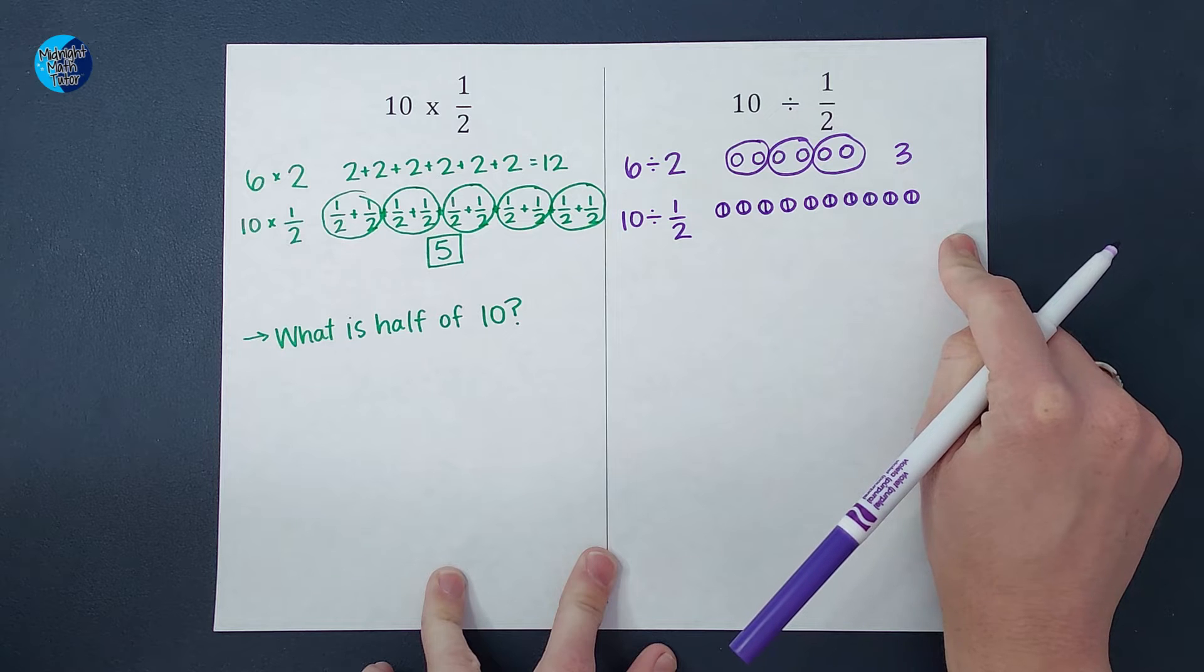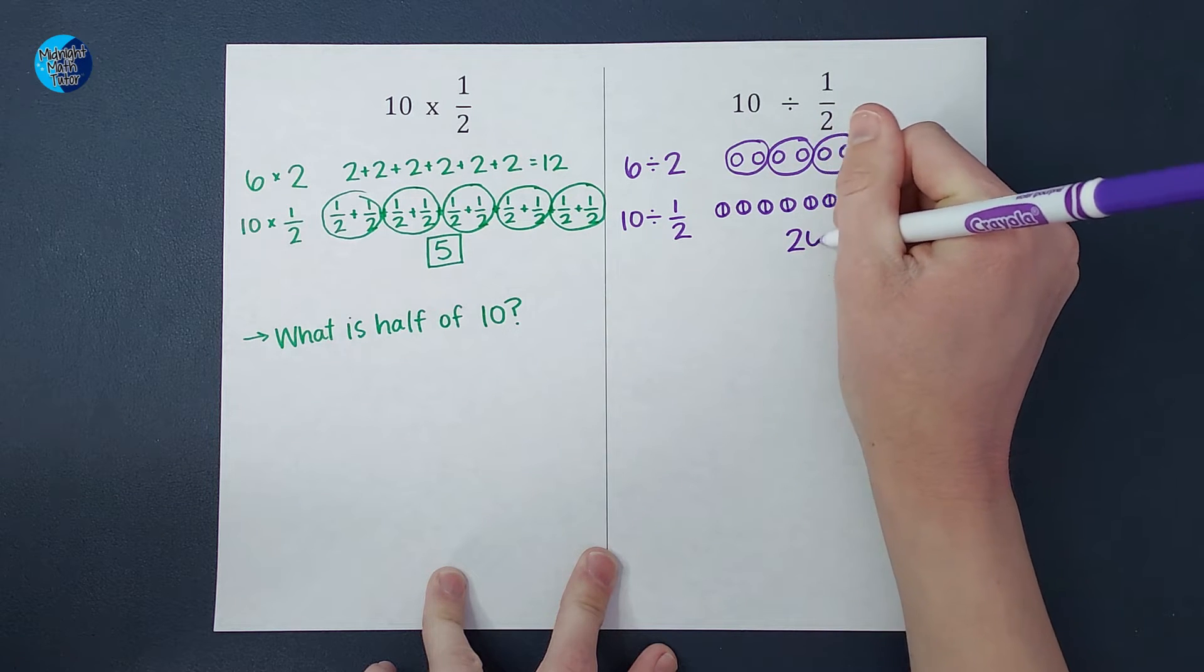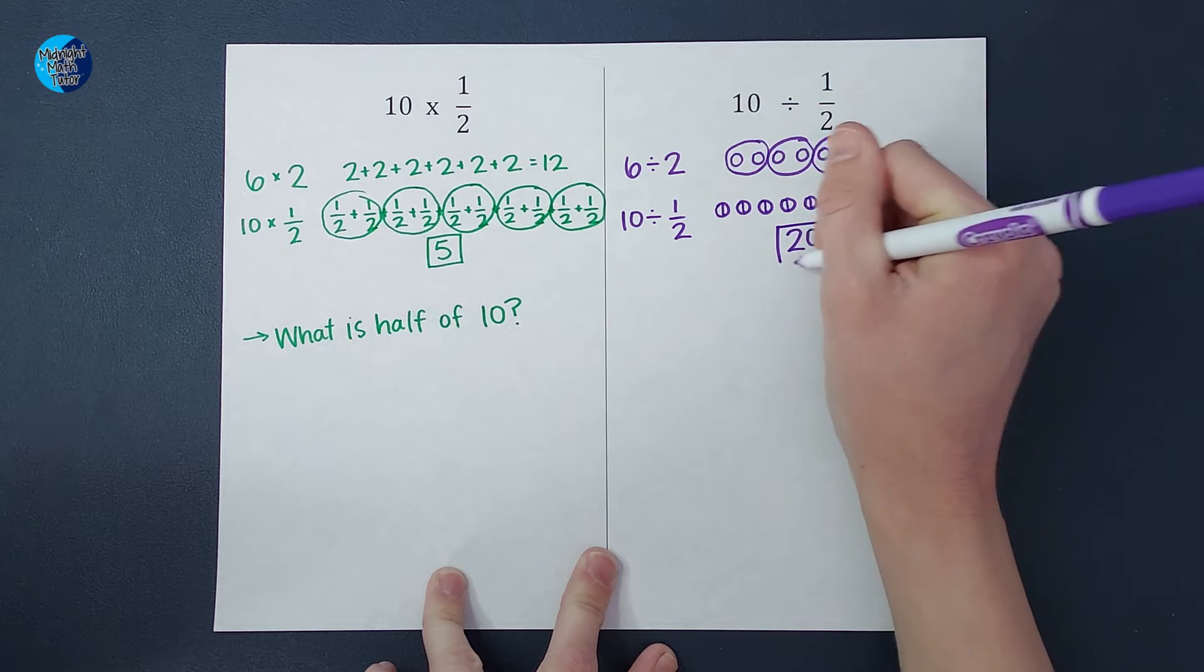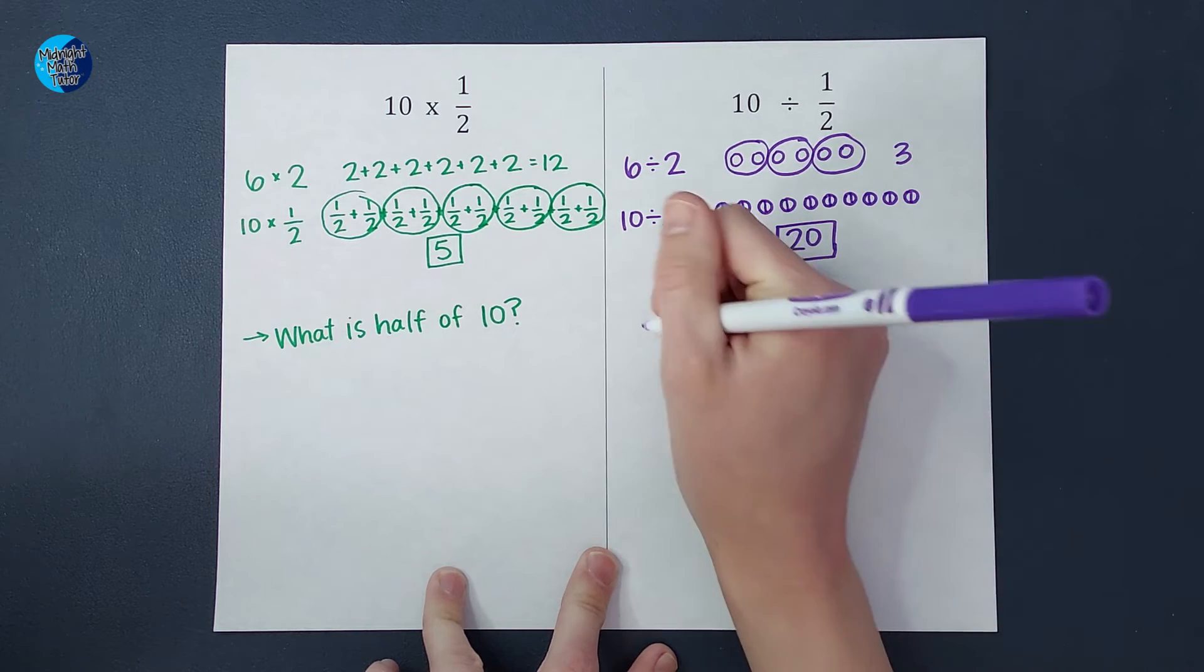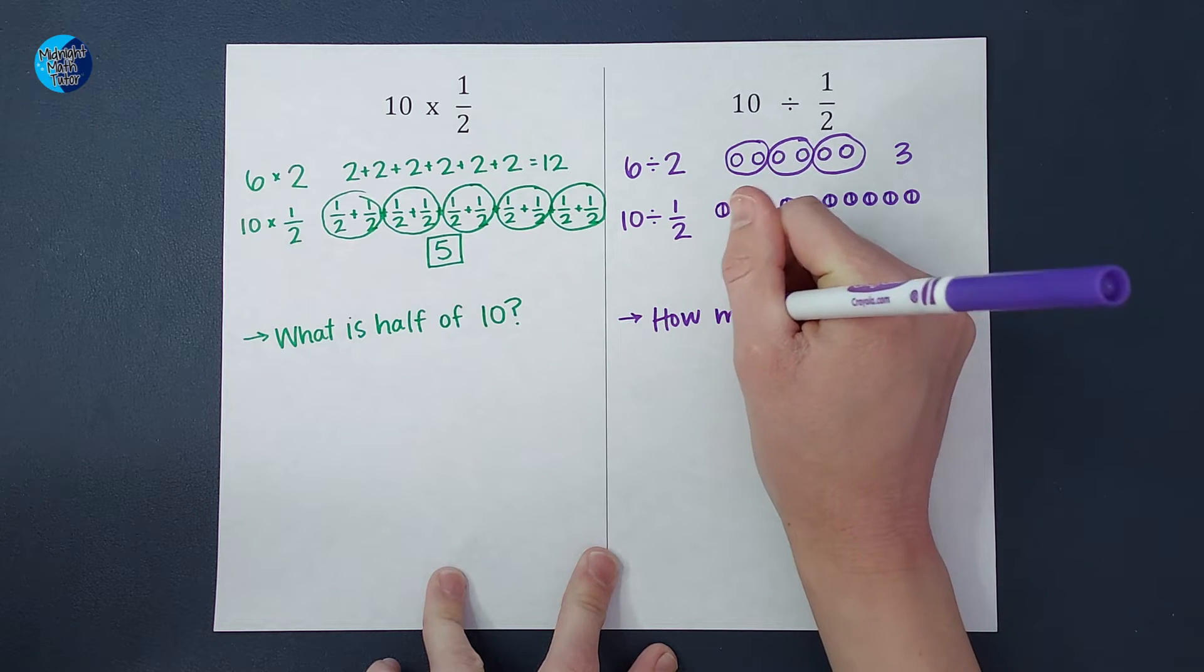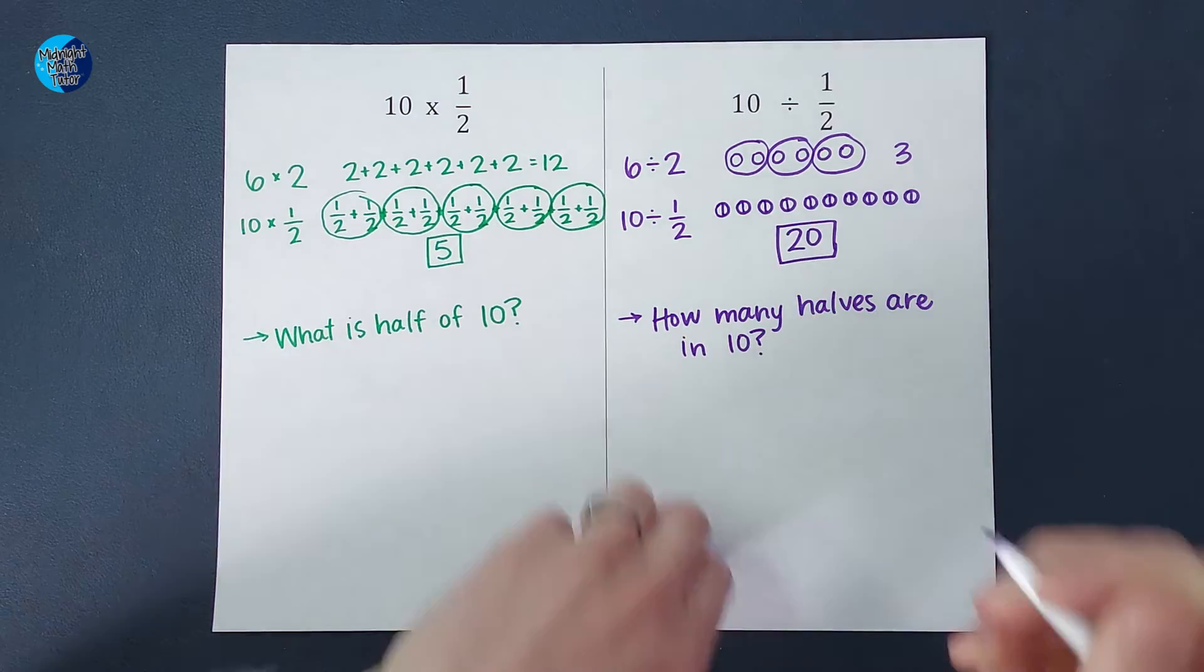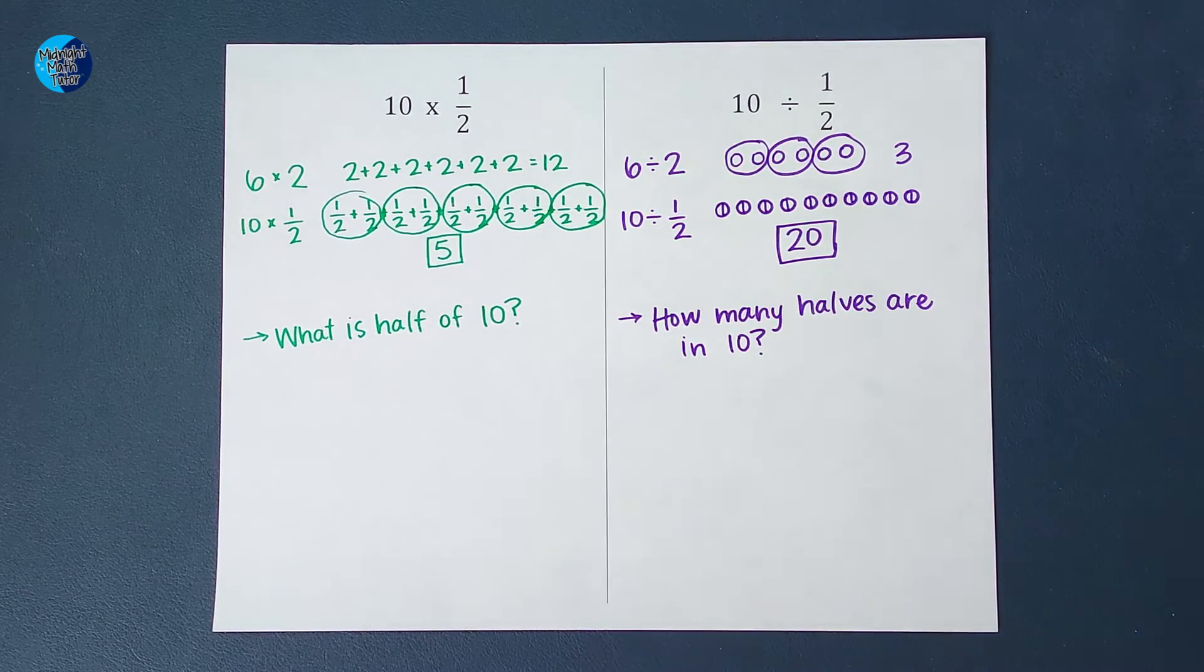So if I cut the rest of these and I count up how many halves I have, that ends up being 20 halves. So what this one is asking me is how many halves are in 10? That's the difference right there.